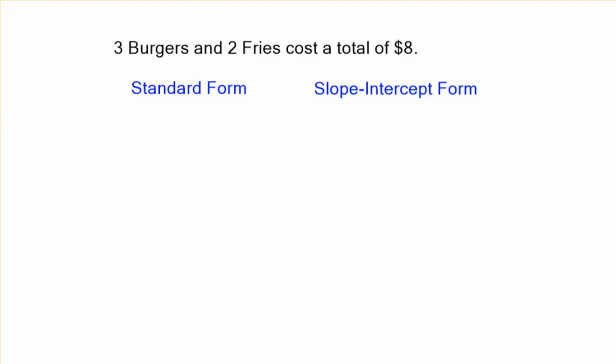Let's say we were given an example: three burgers and two fries cost a total of $8. Which would be better? Standard form, that's Ax plus By equals C, and slope-intercept form y equals mx plus b. It would be standard form: three burgers plus two fries equals $8. It just goes straight into standard form. You just make the B and F into x and y.